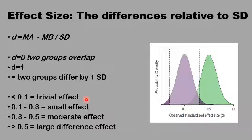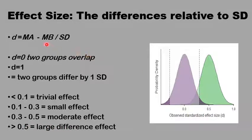Even up to 0.3 is still a small effect. But if the difference between the two means relative to the standard deviation is high enough, like 0.5, this is a large difference between the two groups. If the difference is one standard deviation, you end up with a d equal to one — this is a very large difference between the two groups. It will tell you that the two means are separated by more than one standard deviation.